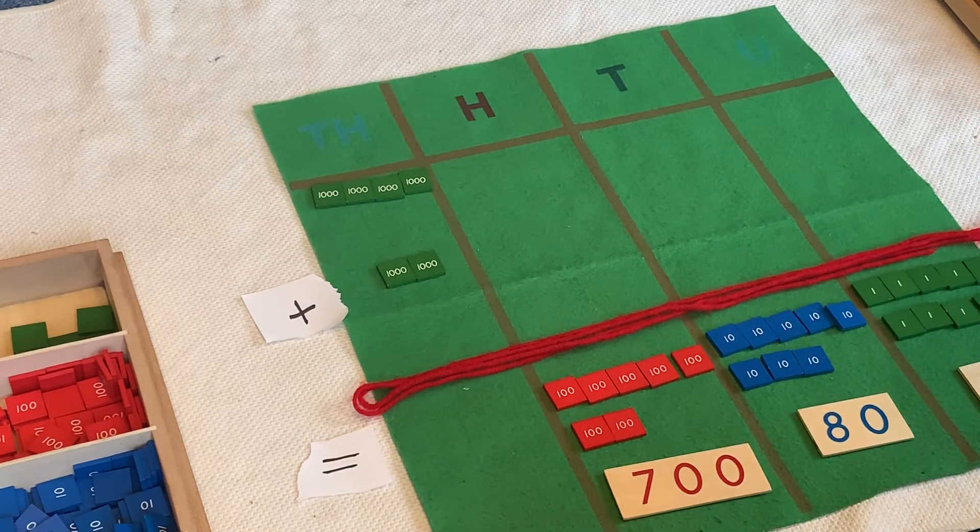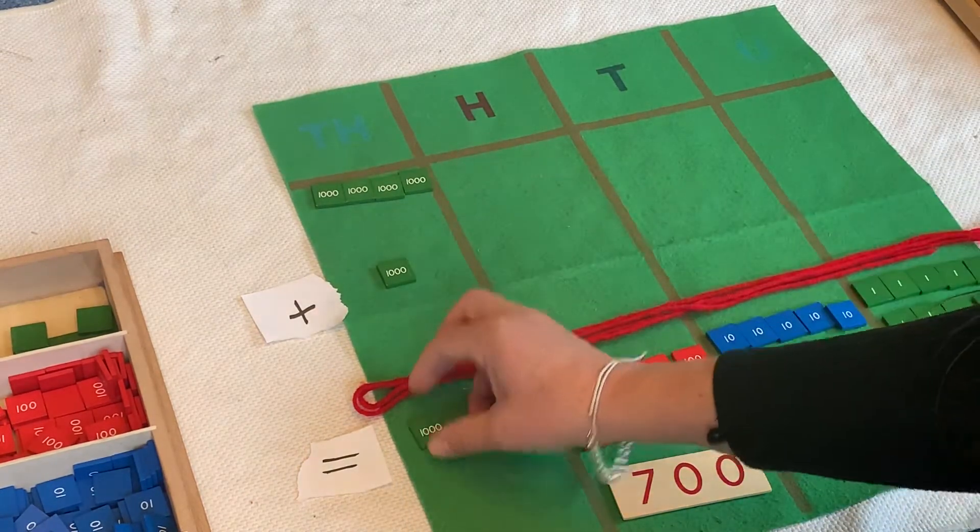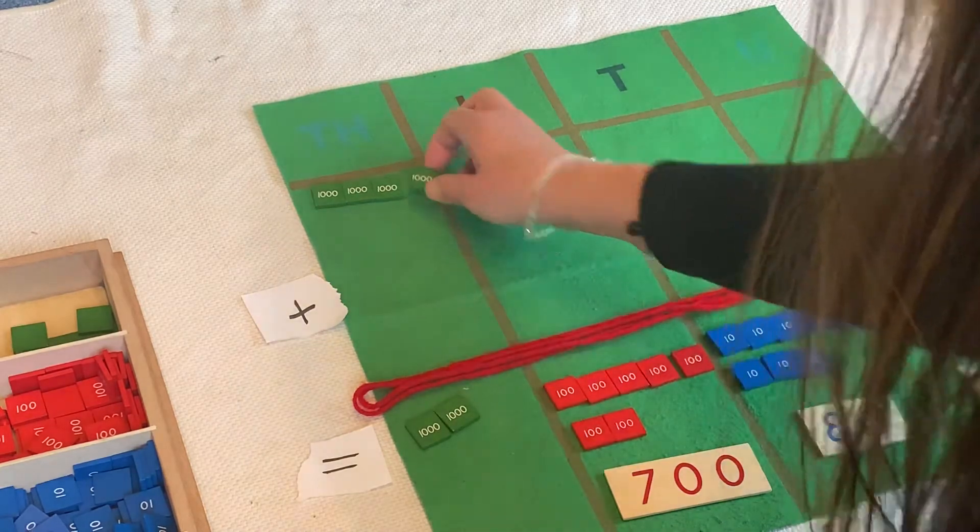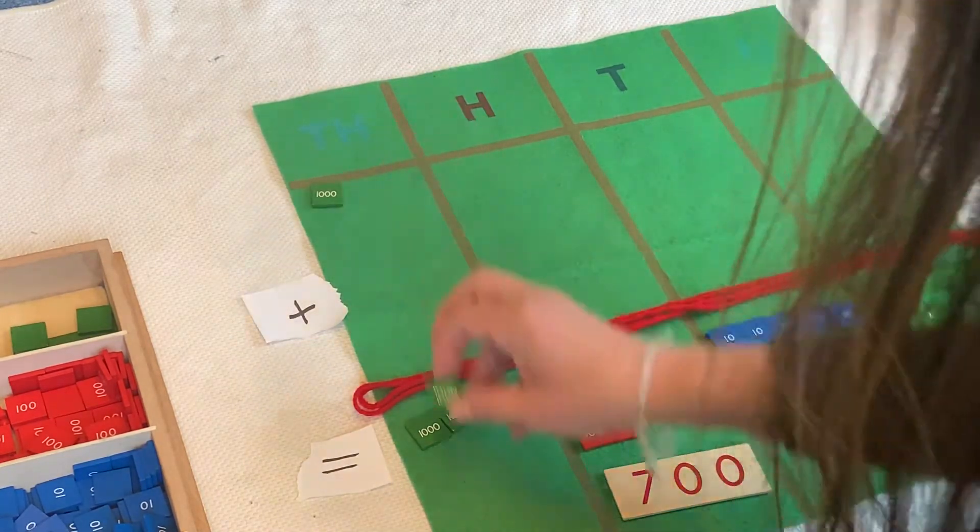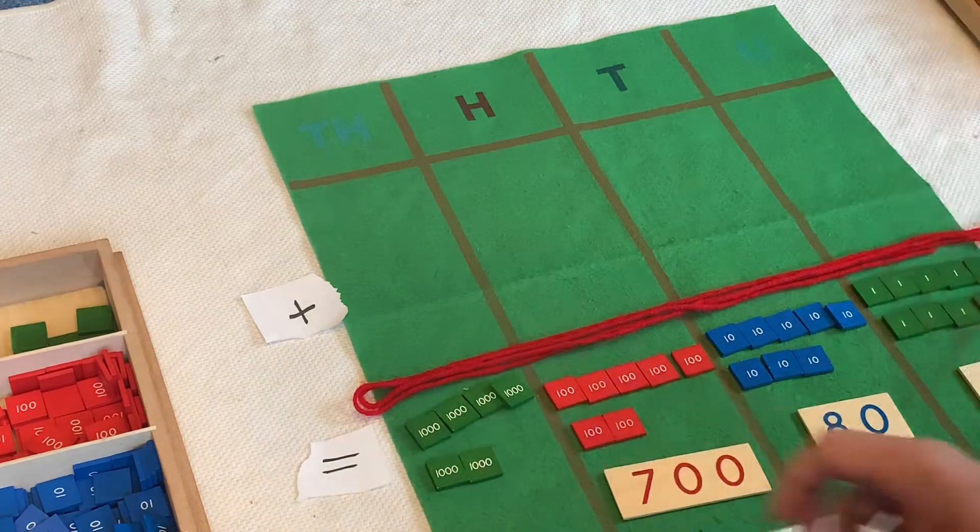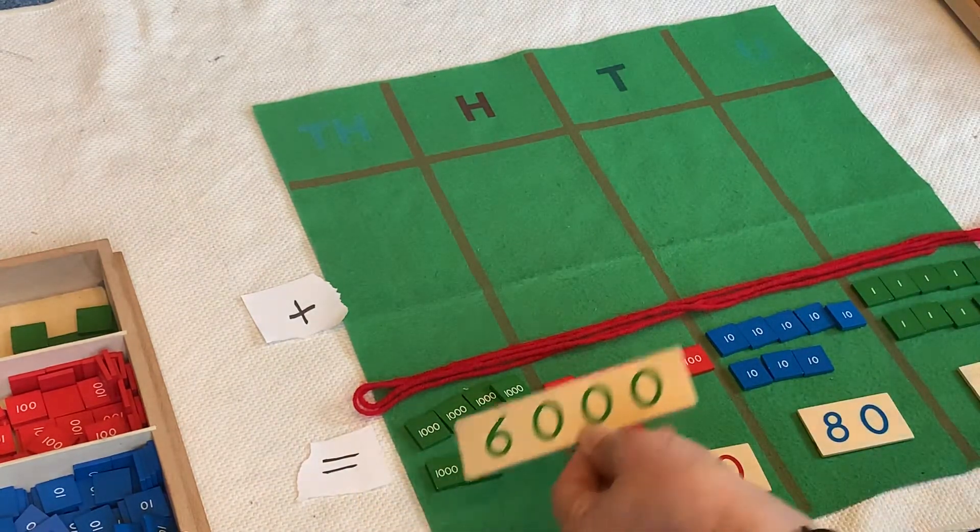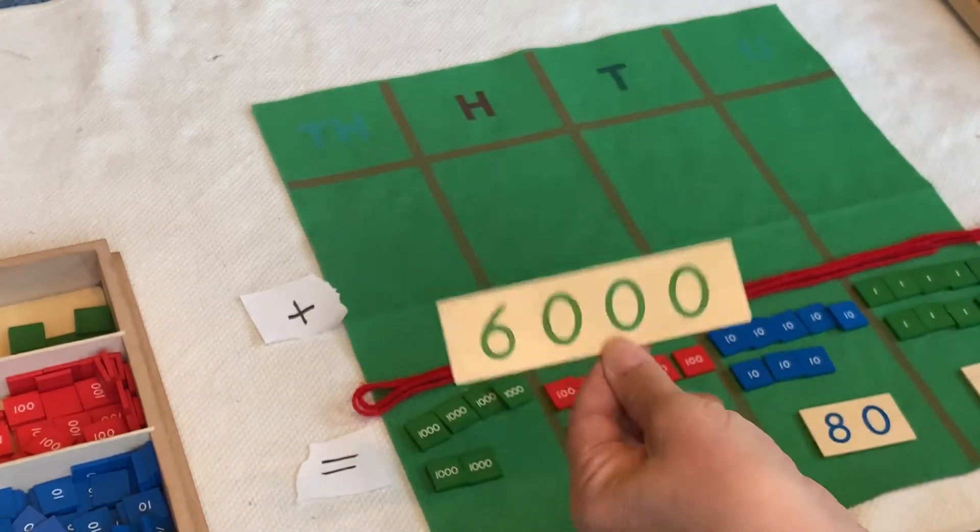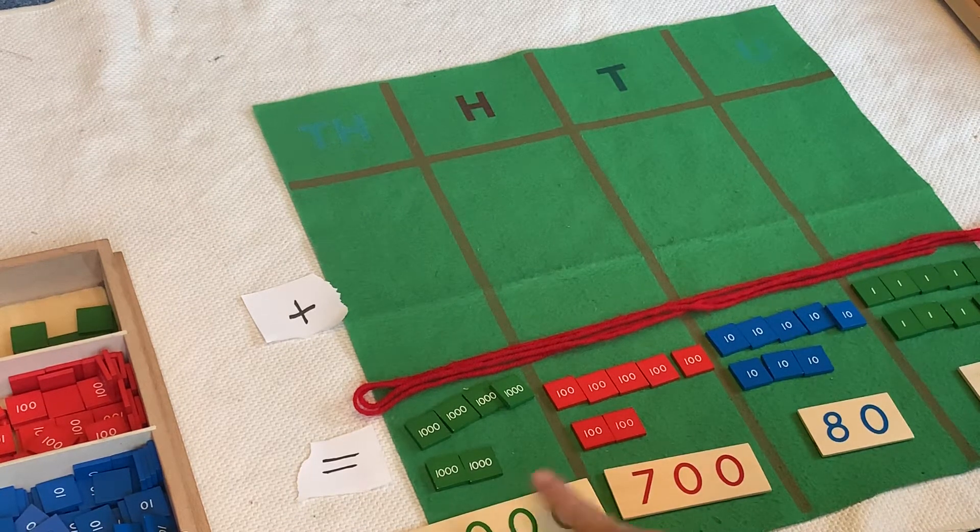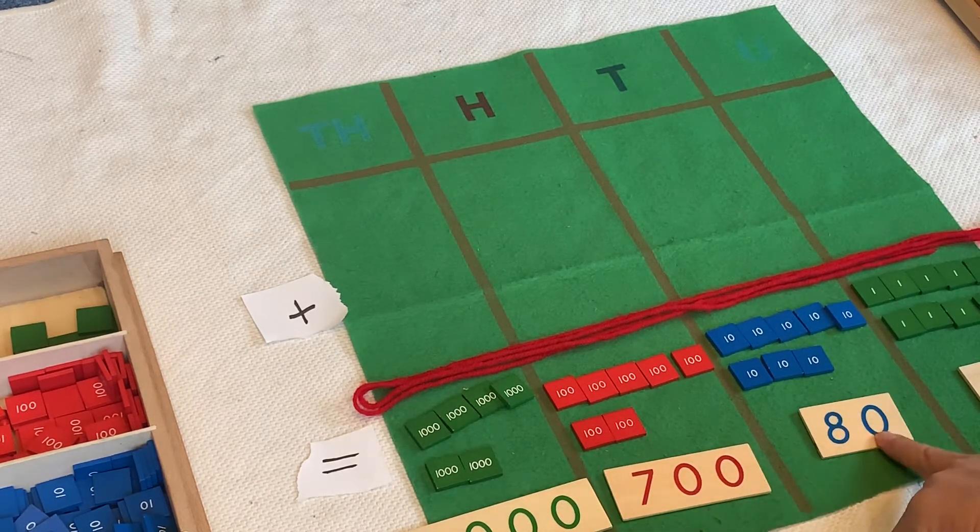Okay, now we're ready for thousands. 1,000, 2,000, 3,000, 4,000, 5,000, 6,000. Our answer in thousands is 6,000. So we have 6,789.